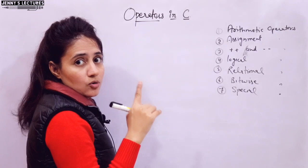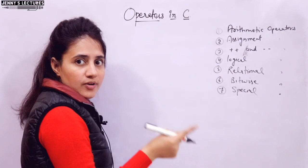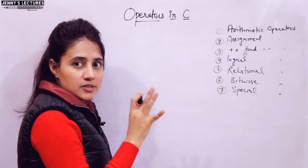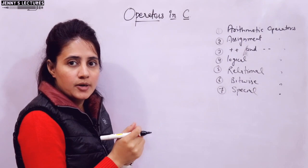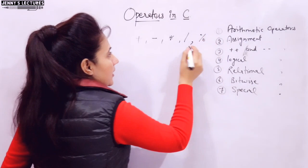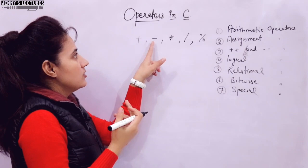The seven types are: arithmetic, assignment, increment and decrement, logical, relational, bitwise, and special. We are going to discuss each type of operator in detail with proper examples and programs. First of all, we are going to discuss arithmetic operators. C provides some built-in arithmetic operators: plus, minus, multiply, divide, and modulo. These operators are used to perform numeric calculations. Everyone is generally aware of plus, minus, multiply, and divide.